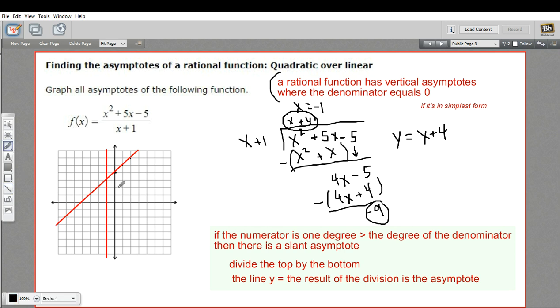And if you were to go on and graph this, you'd cast around for some points and find out maybe there's a branch here and a branch here, or maybe a branch here and a branch here. But that is how to find the asymptotes of a rational function when you've got a slant asymptote.